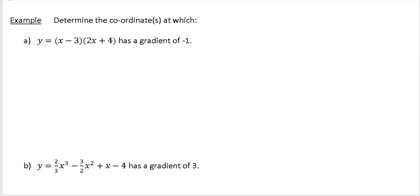In this first one it says determine the coordinates at which y equals (x minus 3)(2x plus 4) has a gradient of minus 1. First thing you want to do is multiply out this bracket and see what you get. So you're going to get 2x squared plus 4x minus 6x minus 12, tidy it up and make life a bit easier. That's going to be 2x squared minus 2x minus 12.